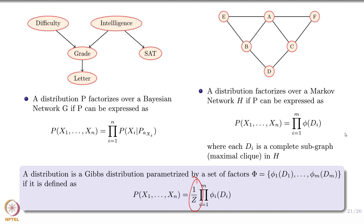In some cases the random variables interact with each other rather than depend on each other in a directional sense — the dependence is symmetric, like an interaction where both are equal contributors. That's what happened in the study group example. From there we moved to undirected graphical models, where we argued that the factors should correspond to maximal cliques, because maximal cliques give you the minimum possible set of parameters and capture what you actually want to capture.